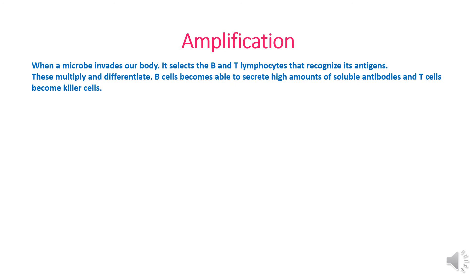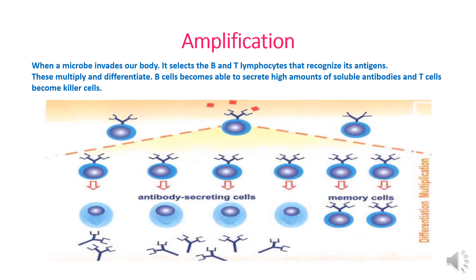Amplification: When a microbe invades our body, it selects B and T lymphocytes that recognize its antigen. These multiply and differentiate — B cells become able to secrete high amounts of soluble antibodies into the plasma, and T cells become killer cells. The B lymphocyte, upon recognizing the antigen, multiplies and increases in number, then differentiates to secrete a huge amount of antibodies.